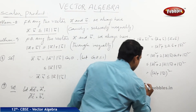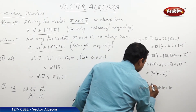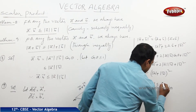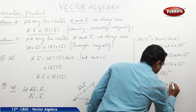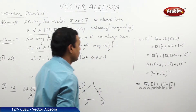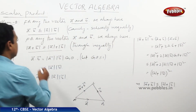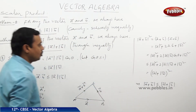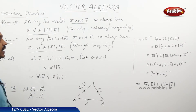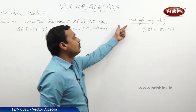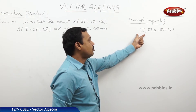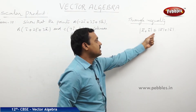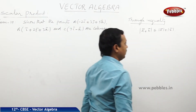This implies that |a+b| ≤ |a| + |b|. Hence the second inequality also holds, known as the triangle inequality: |a+b| ≤ |a| + |b|.